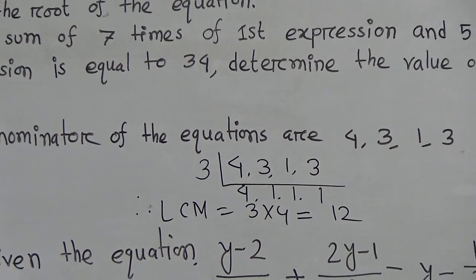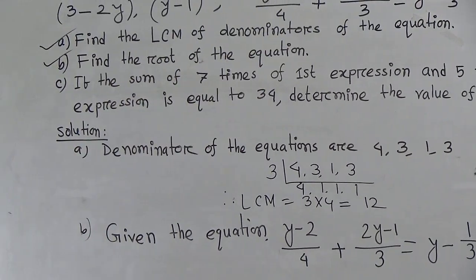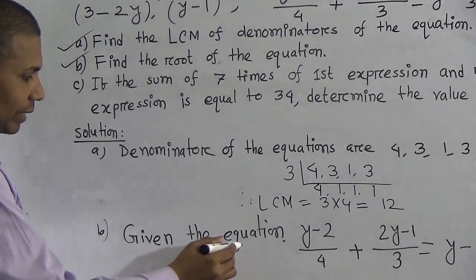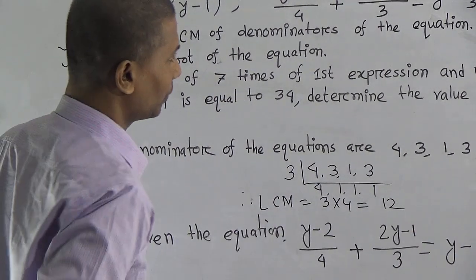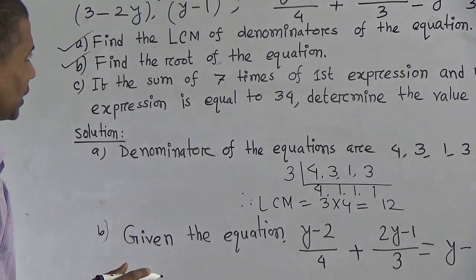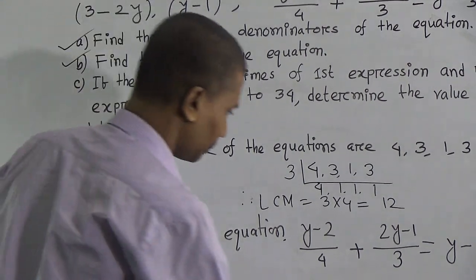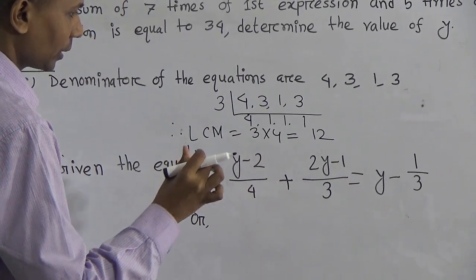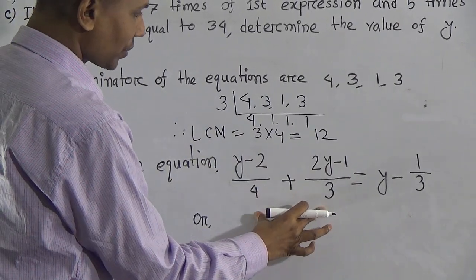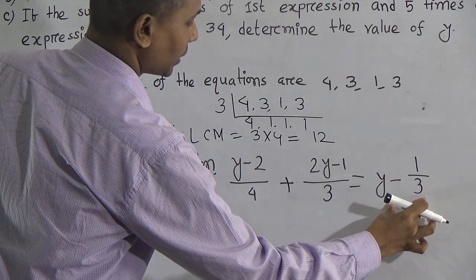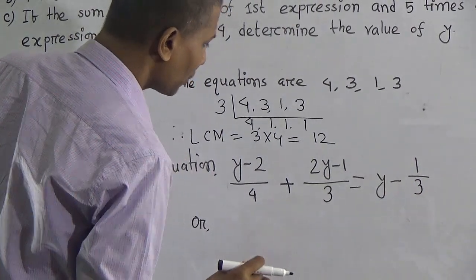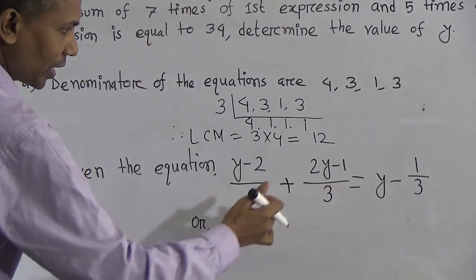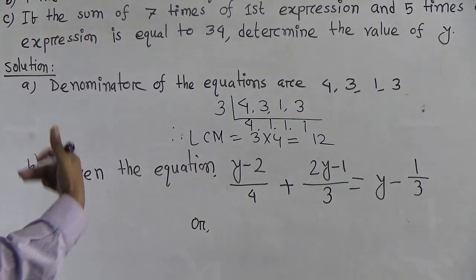Now, B-number question: find the root of the equation. Given the equation, we now determine the root. This is the left-hand side and this is the right-hand side. We have to firstly separate the variable from the numbers.